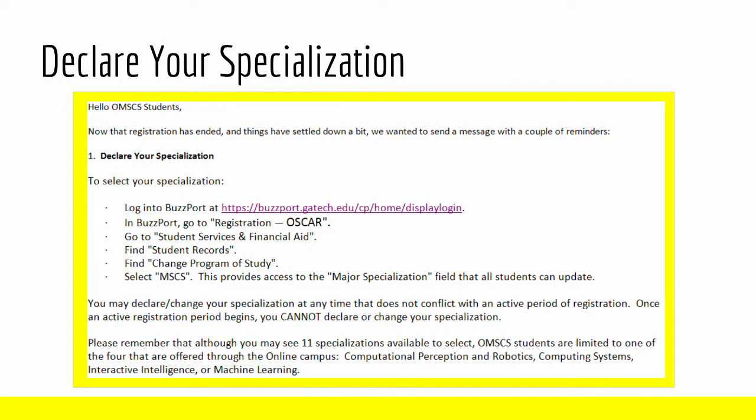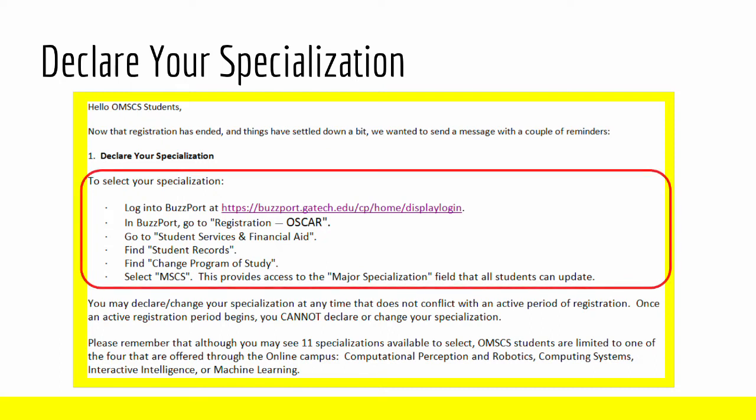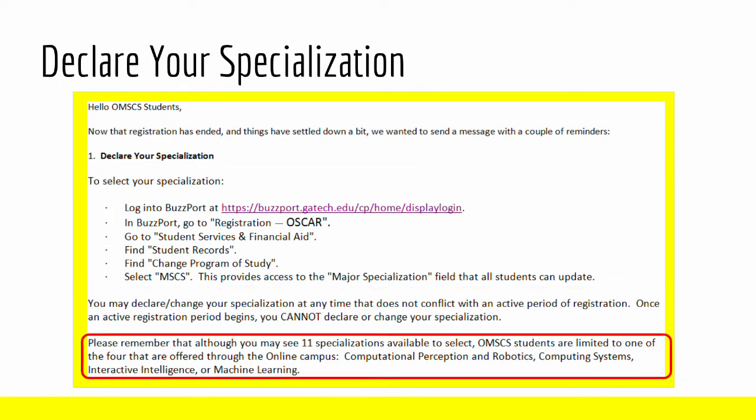Now that I'm a few weeks into the program, I received this email which gave instructions on how to select a specialization. Another important point from this email is that even though the selector will show 11 different specialization options for OMS CS students, we are restricted to four. The other specializations are for on-campus students only.